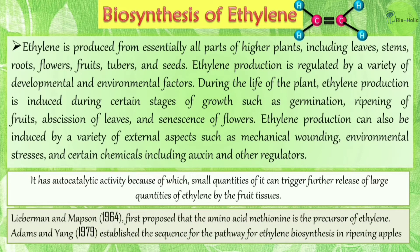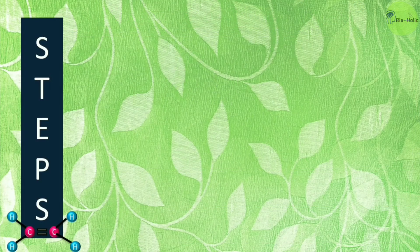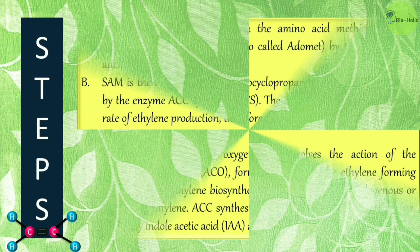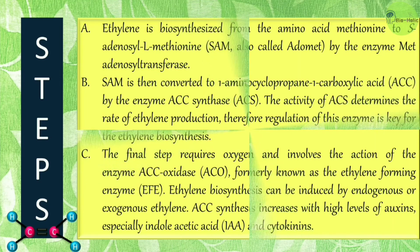Lieberman and Mapson in 1964 first proposed that the amino acid methionine is the precursor of ethylene. Adams and Yang in 1979 established the sequence of the pathway for ethylene biosynthesis in ripening apples. There are three major steps in the ethylene biosynthesis process.